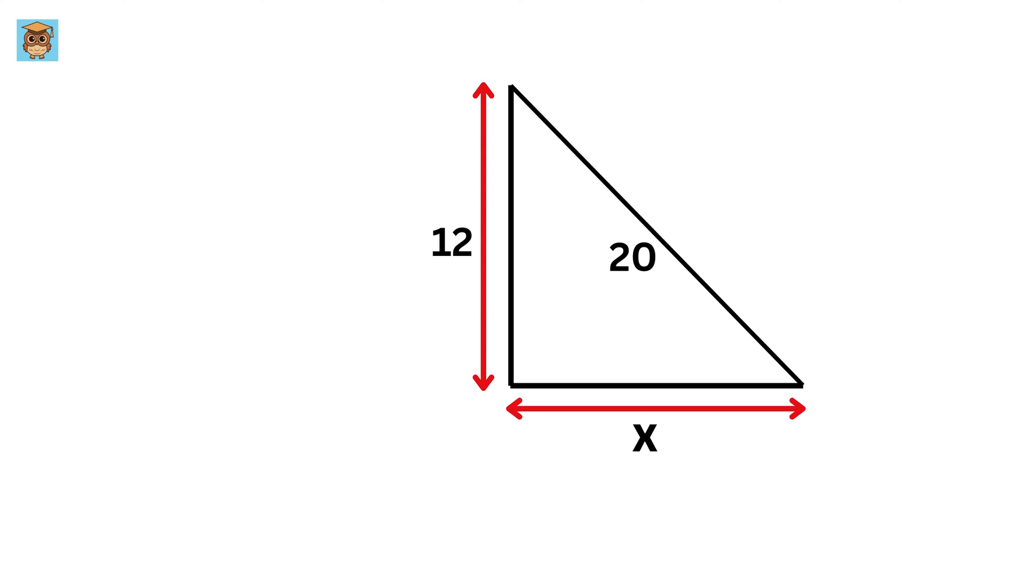Now, look at this right-angle triangle. We have this length as y, or 12 units, and this hypotenuse as 20 units. So, we can simply use Pythagoras' theorem to find the value of x.